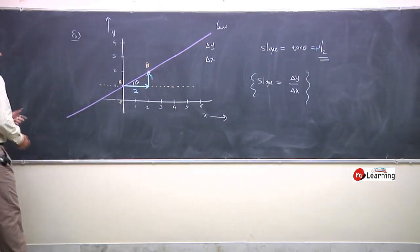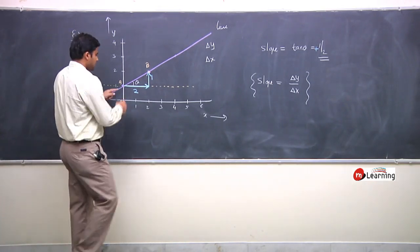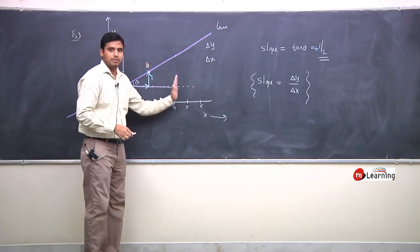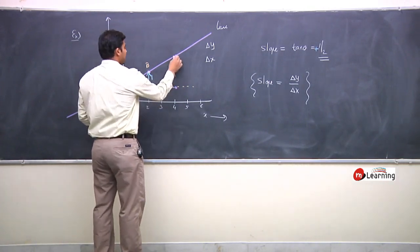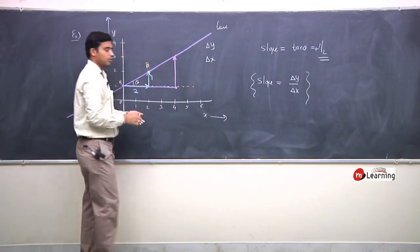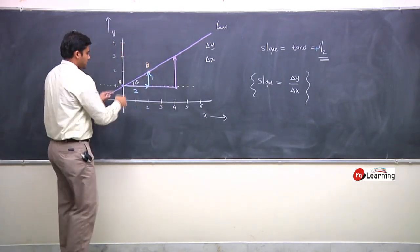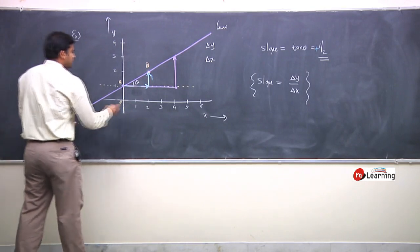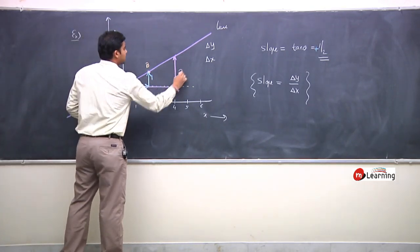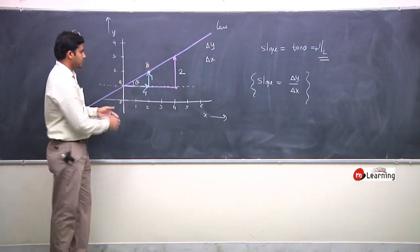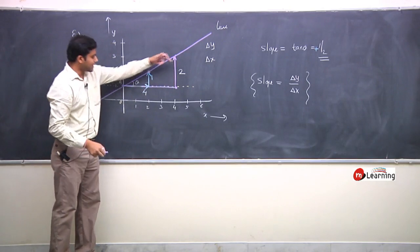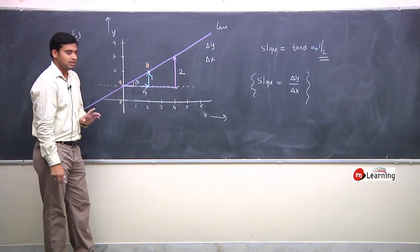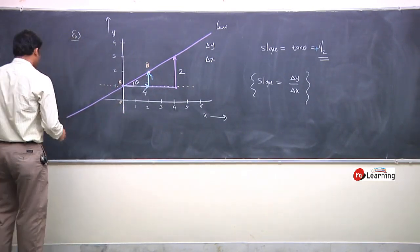It is not necessary to use the same triangle. For example, if you go 4 units in x, you reach the line with 2 units change in y. In this bigger triangle the ratio is 2 by 4, which is still half. All such triangles are similar triangles, so the ratio is the same regardless of which triangle you choose.